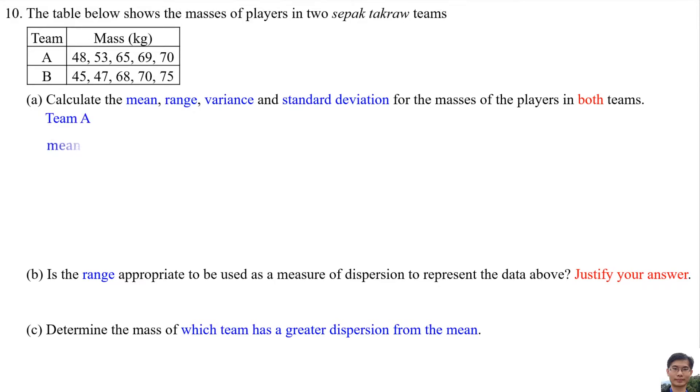Team A: The mean is the average of all the masses in Team A, so the mean is 61. The range is the maximum value minus the minimum value. The maximum mass for Team A is 70 and the minimum is 48, so 70 minus 48 gives a range of 22.